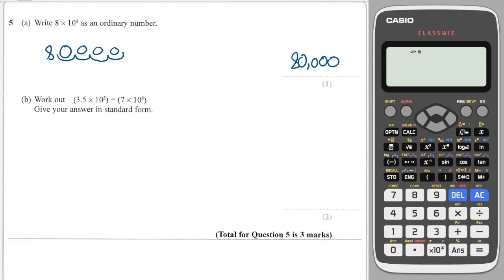I'm going to use my calculator for the next one. I can do brackets 3.5, this button down the bottom here is times 10 to a power, so I can press that and then press 5 afterwards, divided by, open brackets 7, again that times 10 to the power of 8, close brackets. And I get 5 times 10 to the minus 4. So that gives me my answer straight away in standard form, lovely, 5 times 10 to the minus 4.